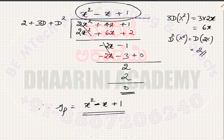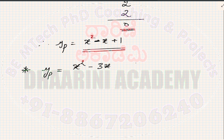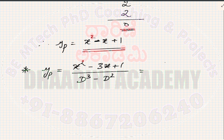Later on we will solve the complete problems — the complete solution of the differential equation where we first solve for yc and then for yp, and yc + yp will be our answer. Before that, let us go for another question of similar type. Let us say yp = (x² − 3x + 1) divided by (4d − d²).